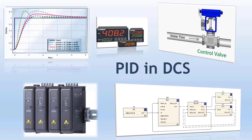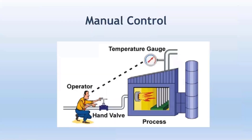If you talk about industry before PID or before the automation revolution, this was how operations were actually held. Operations were going on in the process industry — not automation — and this is a manual controlled procedure.